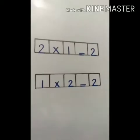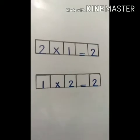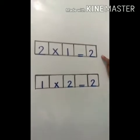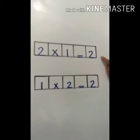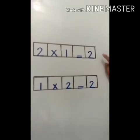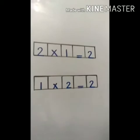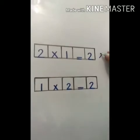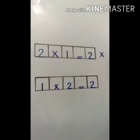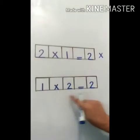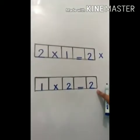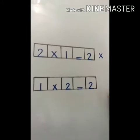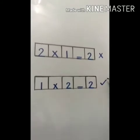Okay students, we have two methods for learning the table. Number one is: two ones are two. Hum ne is method se table read or write nahi karna. Second method is: one time two is two. Hum ne is method se table read or write karna hai.